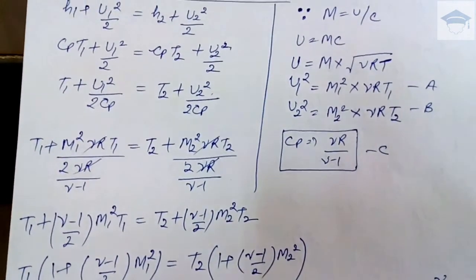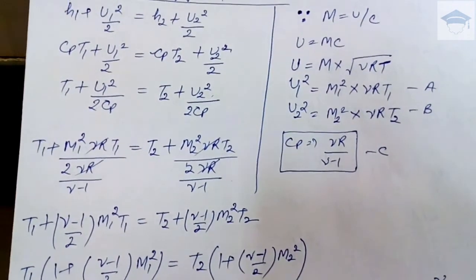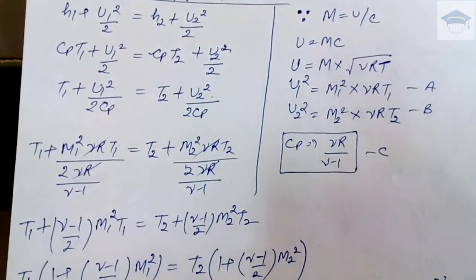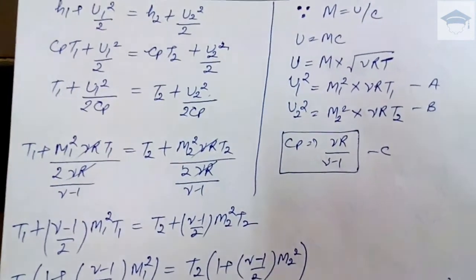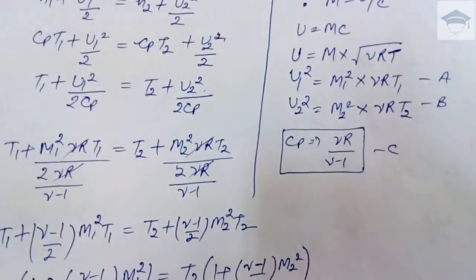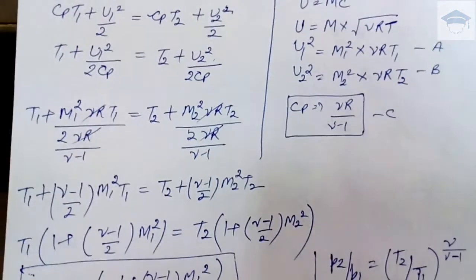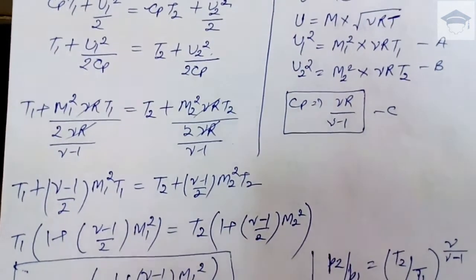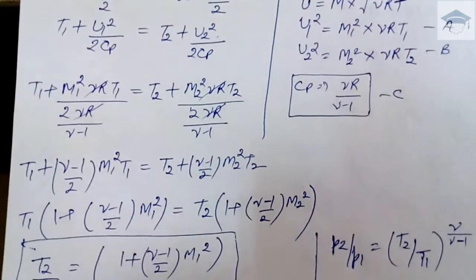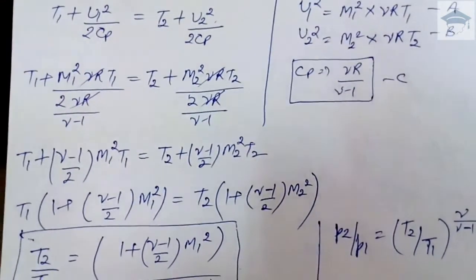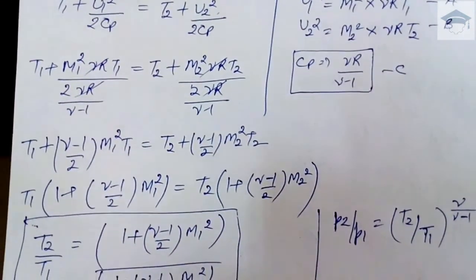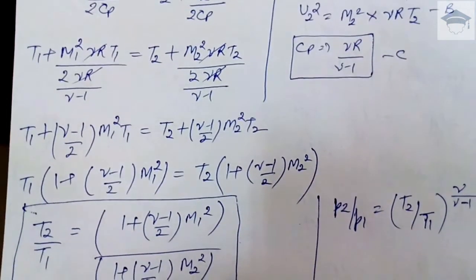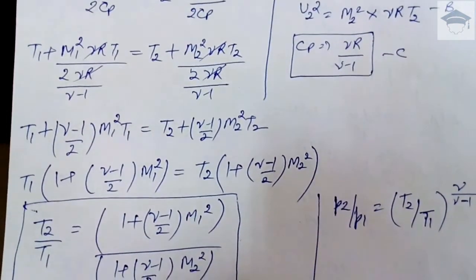Taking T1 common on the left and T2 common on the right: T1·[1 + (γ−1)/2 · M1²] = T2·[1 + (γ−1)/2 · M2²]. Therefore, T2/T1 = [1 + (γ−1)/2 · M1²] / [1 + (γ−1)/2 · M2²].